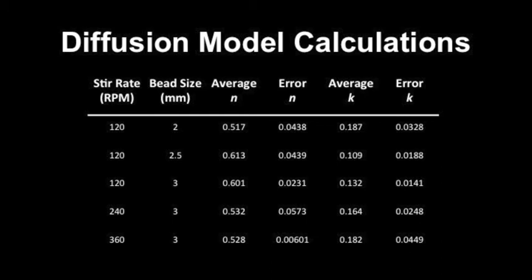The kinetic rate constant, K, and diffusional exponent, N, were calculated by taking the log of the model diffusion equation. Since the model diffusion equation can only be used to model the first 60% of a drug release curve, only the first 20 minutes of the data collected was used for these calculations. The table shown gives a summary of our results.